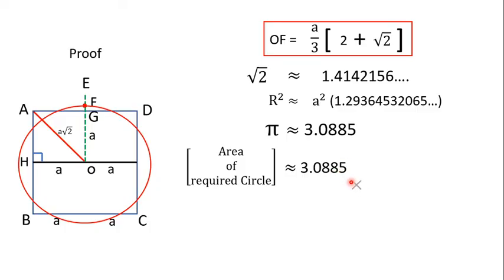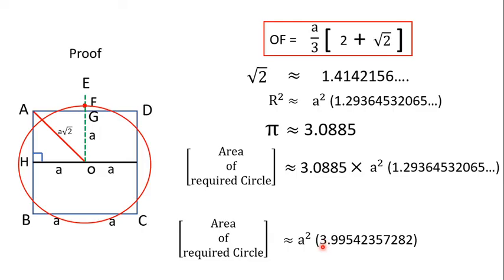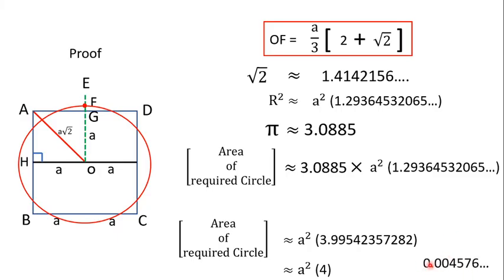The area of the required circle is πr², which equals π times A² times (1.1373853)². On multiplication we get A² × 3.99542382, which is very nearly equal to 4A². Therefore, the area of the circle is approximately 4A², just short by 0.004576 only. So Baudhayana accurately found the area of the circle using his series for π and √2.